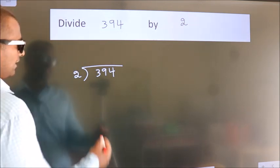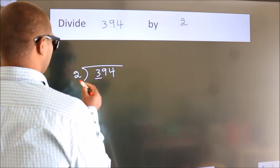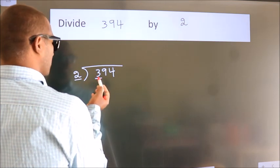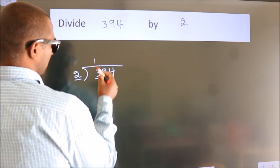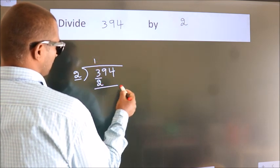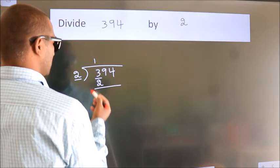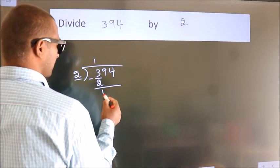Next. Here we have 3, here 2. A number close to 3 in 2 table is 2 1s, 2. Now we should subtract. We get 1.